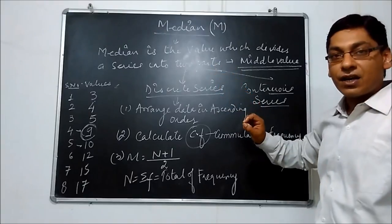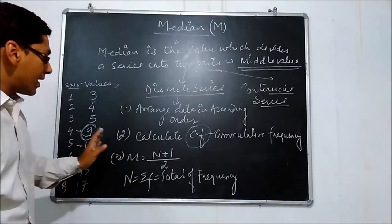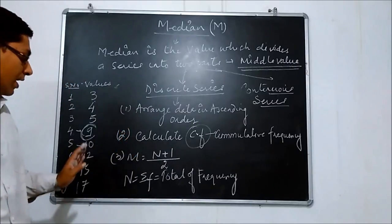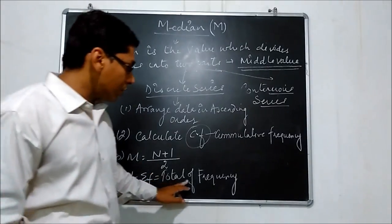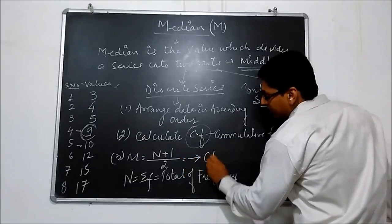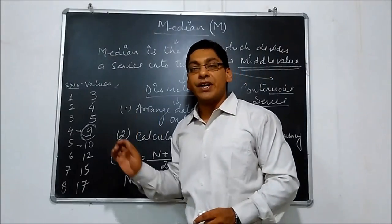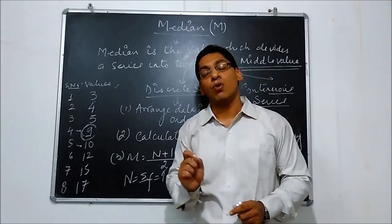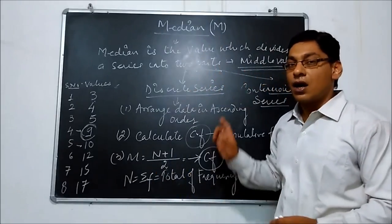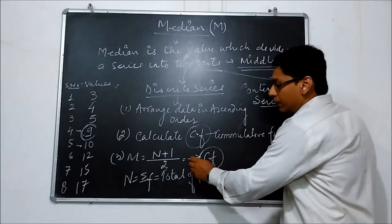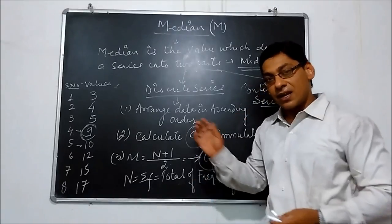So what to do? To calculate median in discrete series: first arrange the data in ascending order, then calculate CF, and then use formula M = (n+1)/2 where n means total of frequency. Whatever value comes, look for it in CF. Wherever that value is located in CF, the corresponding value column gives the median. The answer — whether median, mode or arithmetic mean — always comes from values, never from frequency. Let us see an example.